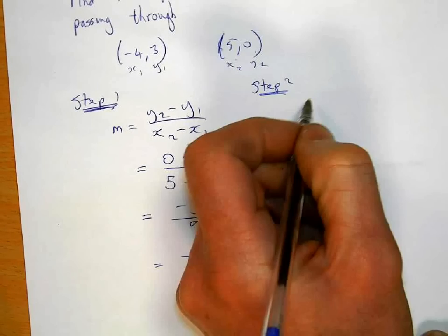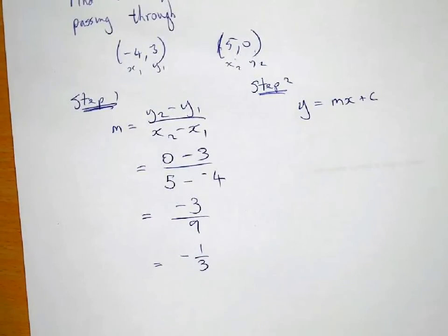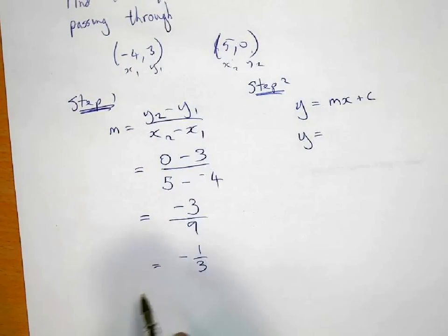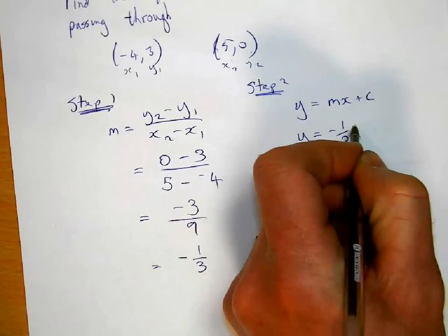The equation of a line is y equals mx plus c. We know what the gradient is. The gradient is minus 1 third, but we don't know what c is.